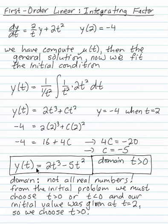So the solution, y of t, is 2t cubed minus 5t squared. Now be careful. That function has domain of all real numbers, but not our solution. The initial problem wouldn't allow t equals 0.